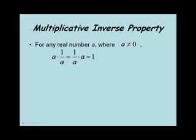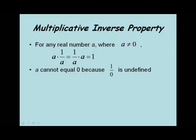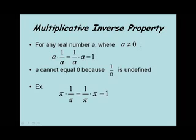Next, we'll look at the multiplicative inverse property, which says for any real number a, where a is not equal to 0, a times 1 over a equals 1 over a times a, which equals 1. Note that a cannot equal 0, because 1 over a would be 1 over 0, which is undefined. As an example, pi times 1 over pi equals 1 over pi times pi, which equals 1.